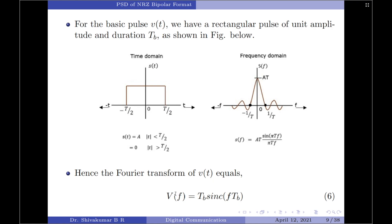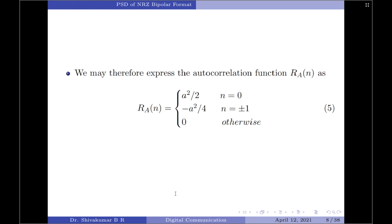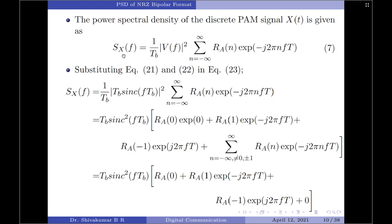With both V(f) and R_a(n) now found, let us substitute them into the power spectral density equation: S_x(f) = (1/Tb)|V(f)|² × Σ R_a(n)·e^(−j2πnfT). Substituting V(f) = Tb·sinc(fTb) and taking the magnitude squared gives Tb²·sinc²(fTb). Dividing by Tb yields (1/Tb) × Tb²·sinc²(fTb) = Tb·sinc²(fTb).